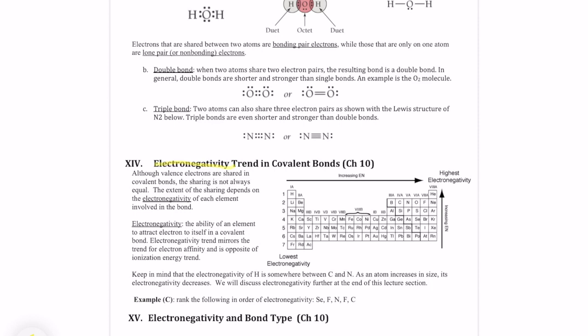Electronegativity is the ability of an element to attract electron to itself in a covalent bond. What does that mean?